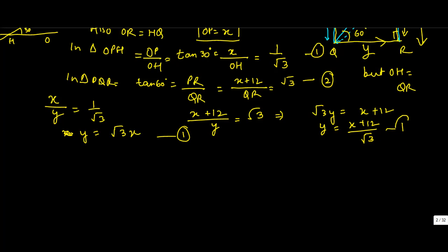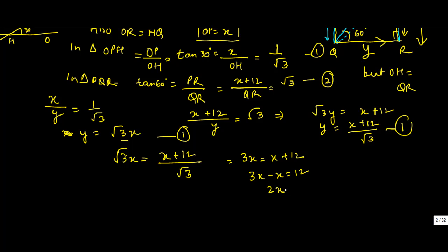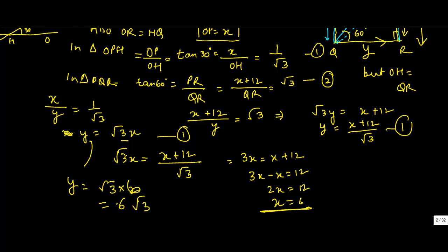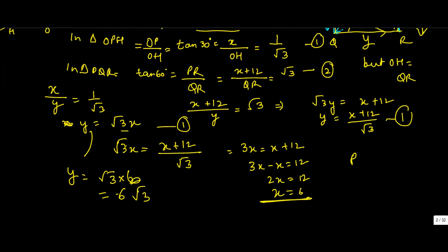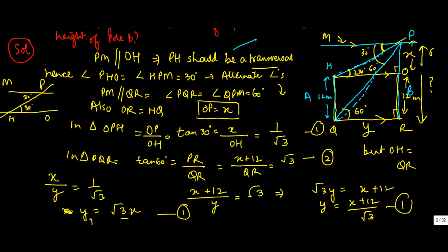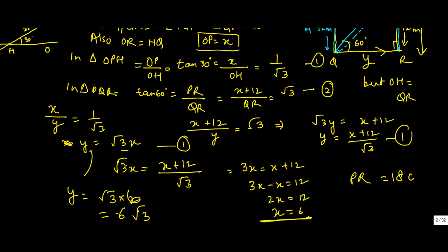Equating both expressions for Y: √3·X = (X + 12)/√3. Multiplying both sides by √3 gives 3X = X + 12, so 2X = 12, meaning X = 6. Therefore Y = √3·X = 6√3. We needed to find PR, which is OP + OR = 6 + 12 = 18 meters. That's your answer.